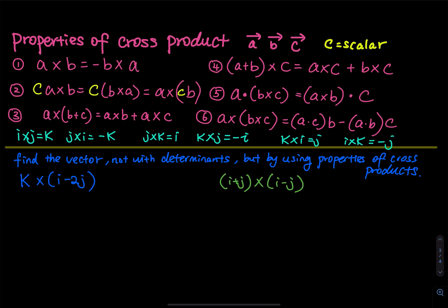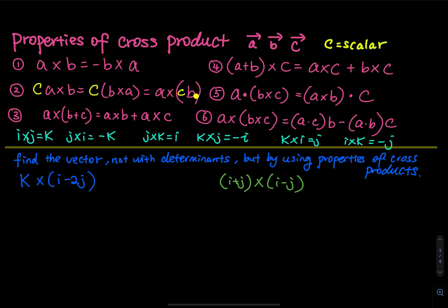Number two: this scalar C, think about that as a constant. C times vector A cross vector B is the same thing as scalar C times A cross B, or you can do A cross C times B. Number three: A cross (B plus C) is the same thing as A cross B plus A cross C. I think of that as distribution.